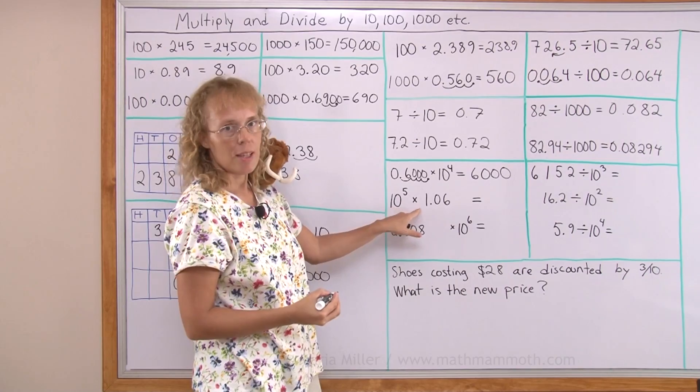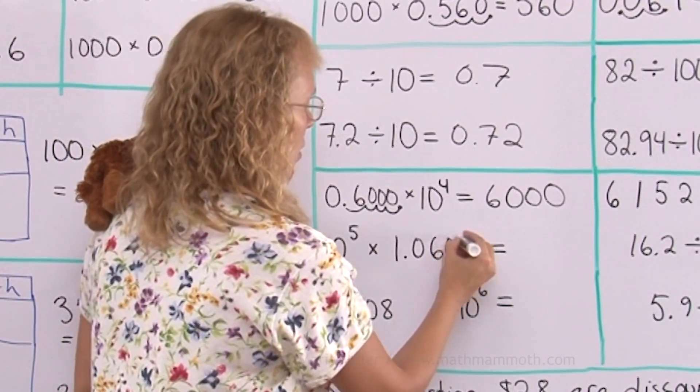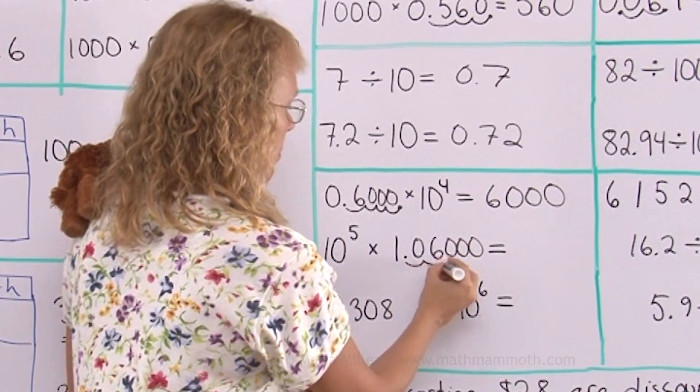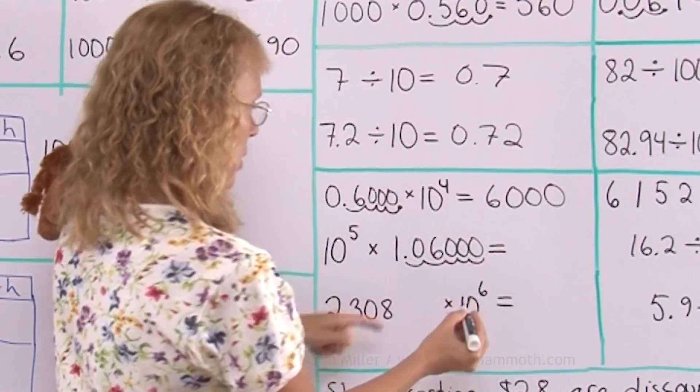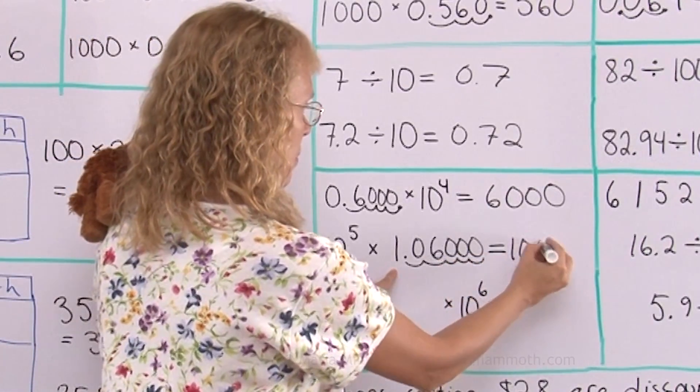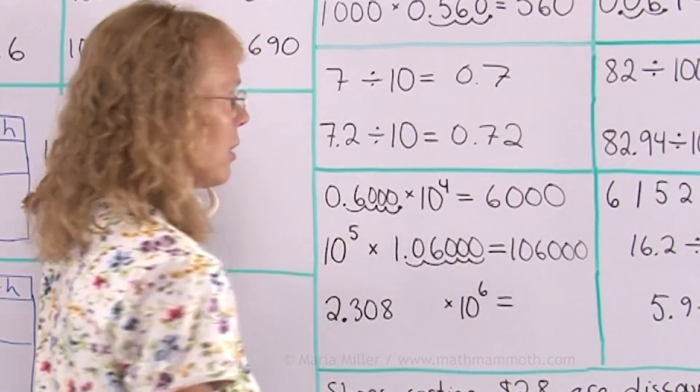10 to the fifth power times the decimal number here. I need to move it five steps now, right? So I get 106,000.